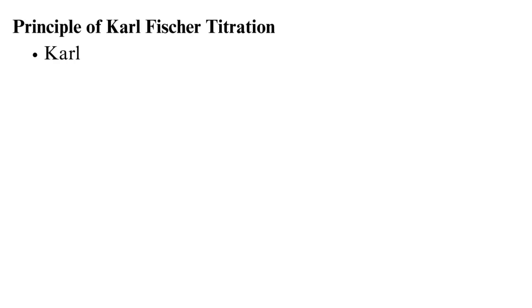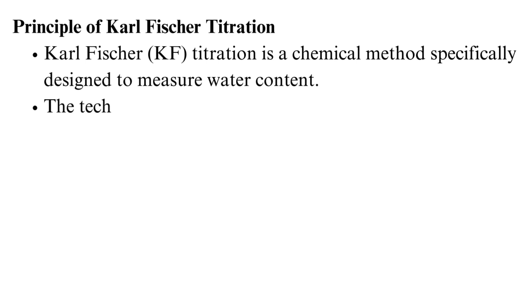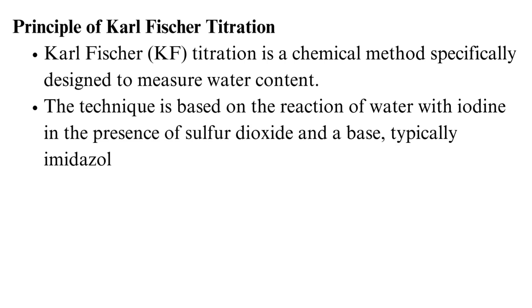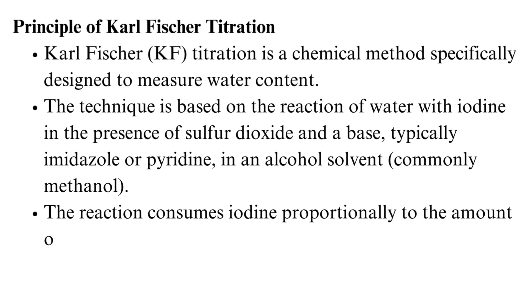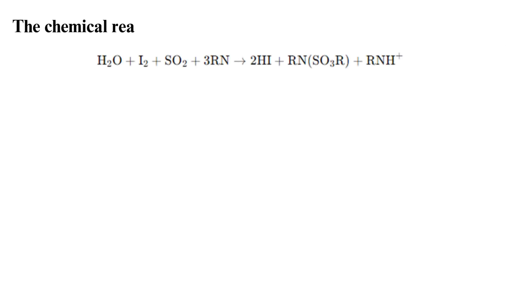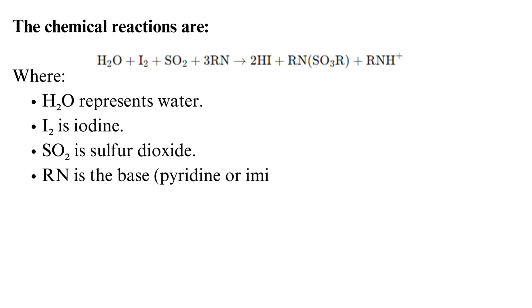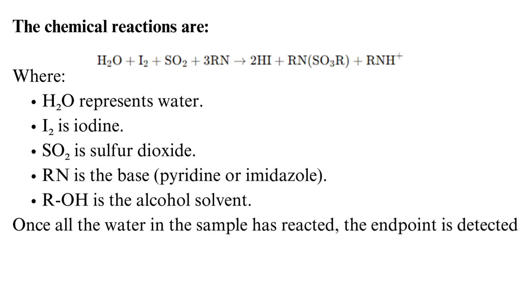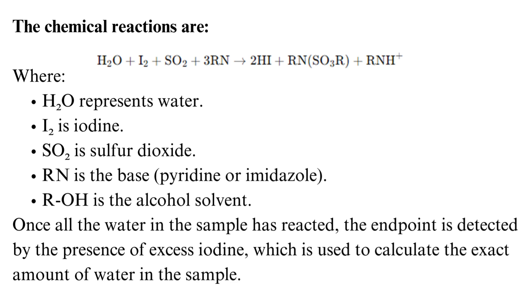Karl Fischer titration is a chemical method specifically designed to measure water content. The technique is based on the reaction of water with iodine in the presence of sulfur dioxide and a base — typically imidazole or pyridine — in an alcohol solvent. The reaction consumes iodine proportionally to the amount of water in the sample, allowing precise quantification. In the reaction, H₂O represents water, I₂ is iodine, SO₂ is sulfur dioxide, RN is the base (pyridine or imidazole), and ROH is the alcohol solvent. The endpoint is detected by the presence of excess iodine, used to calculate the exact amount of water in the sample.